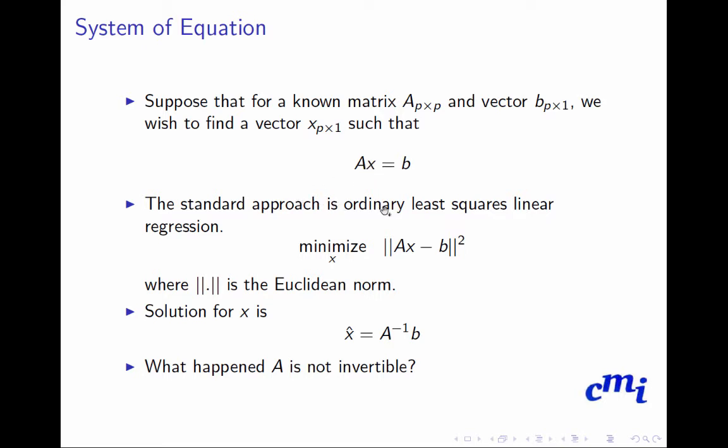Standard approach, ordinary least squares regression, is minimize Ax minus B square, which is the Euclidean norm. The solution gives you x hat, which is A inverse B. So the question is, what happens if A is not invertible?